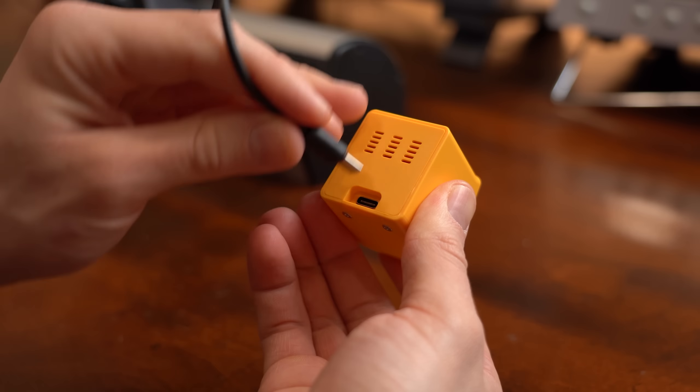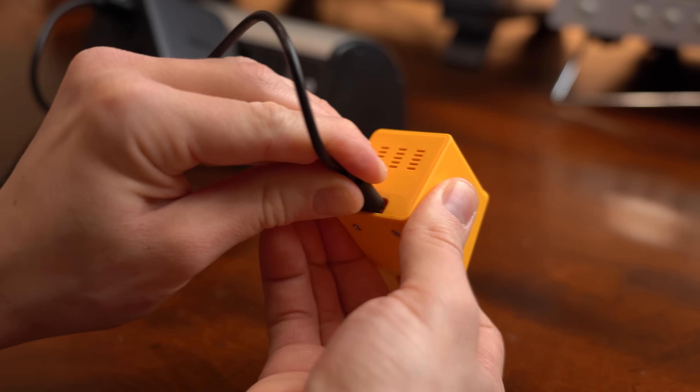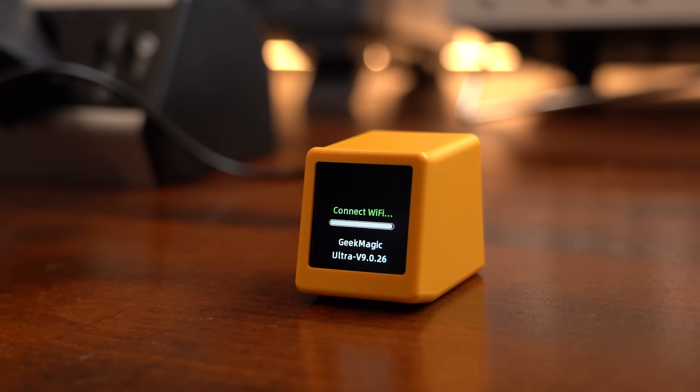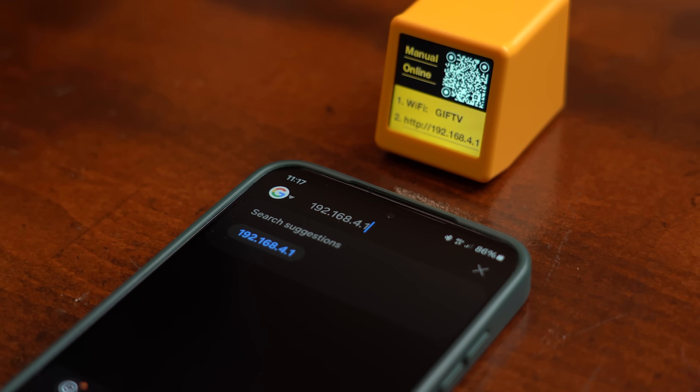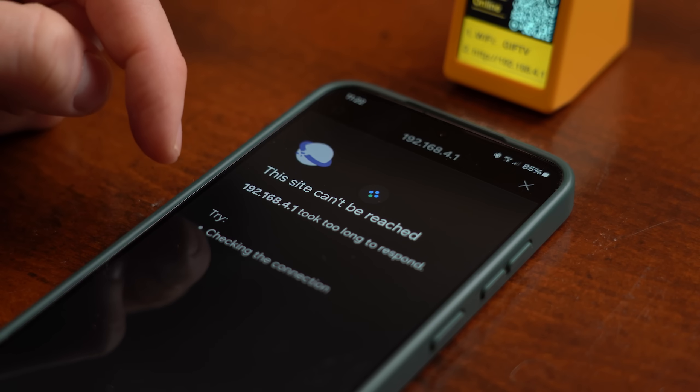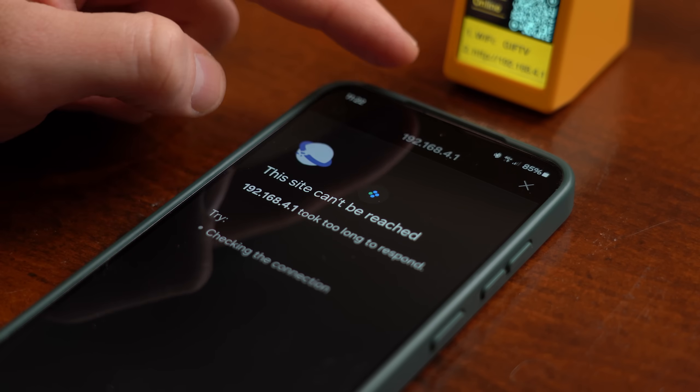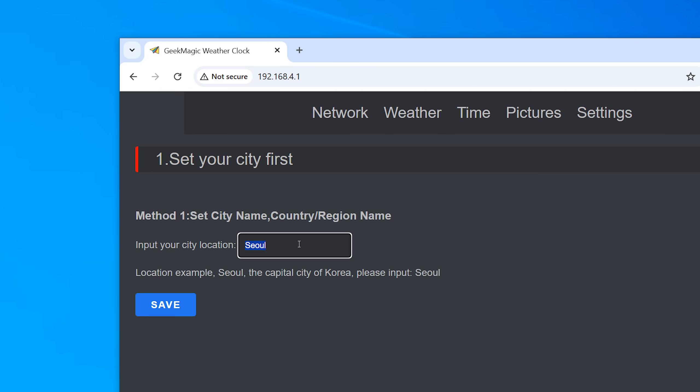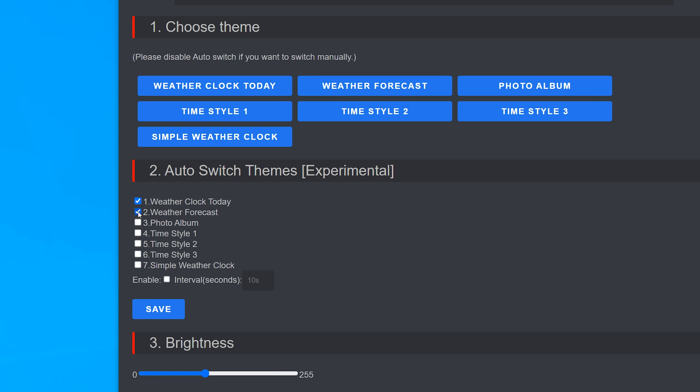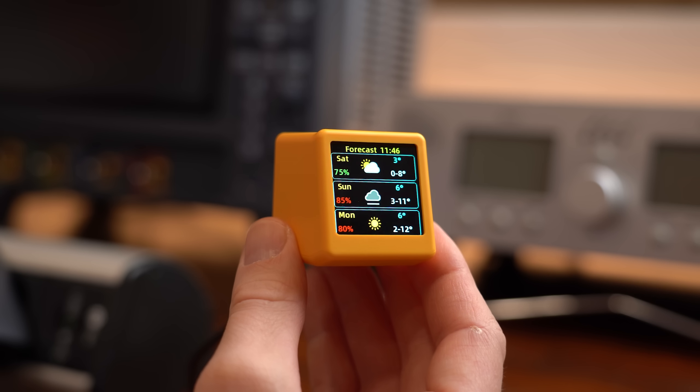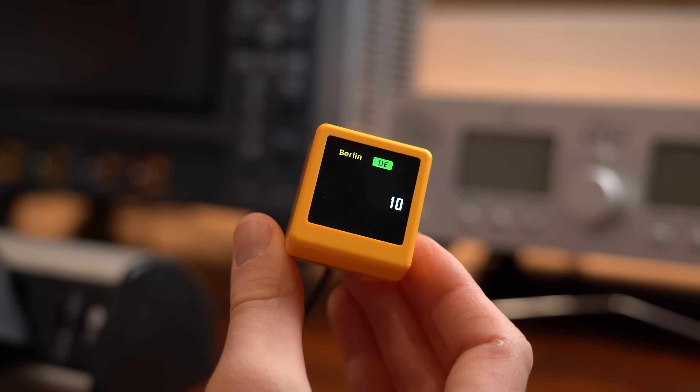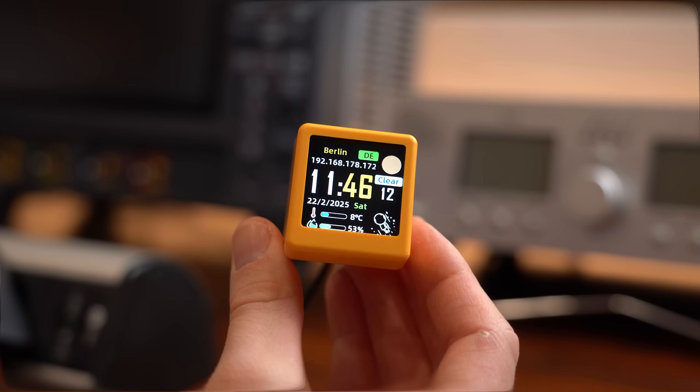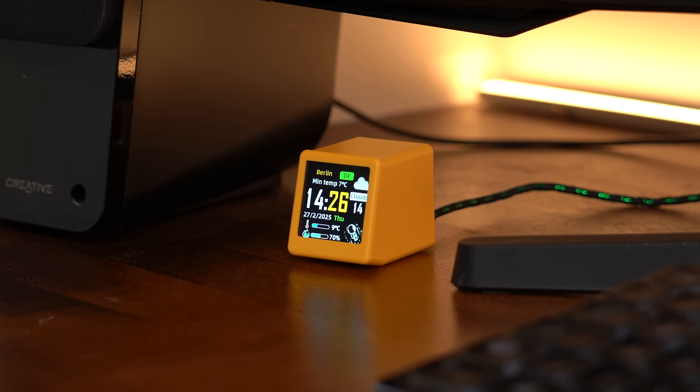To use it we simply have to power it via USB-C, connect to its access point and then configure it using a web user interface which sadly didn't work with my smartphone though. However it worked perfectly fine with my PC and thus after adjusting these settings to my liking I got this awesome looking weather station which like expected fits perfectly under my PC screen.